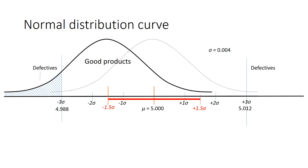We can calculate the proportion of defective units — the area under the shaded region — using the Excel NORM.DIST function. The proportion of defectives on the left-hand tail of the normal distribution curve is 6.68%. There are no defective units on the right-hand tail, because that tail is within the specification limits.